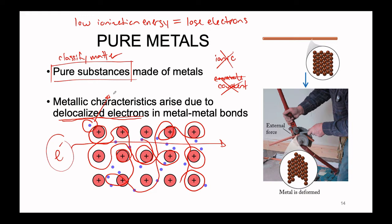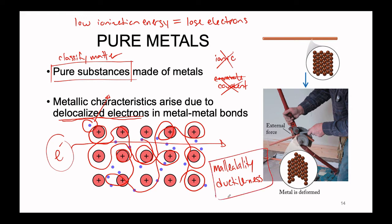Some other properties that the delocalization of electrons gives rise to are malleability and ductility. Metals are malleable and ductile — they can be formed or made into any type of shape really. They can be pounded into flat sheets or drawn into wires. The reason why they have these unique physical properties again comes down to the delocalization of electrons.